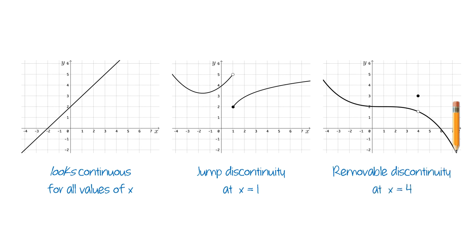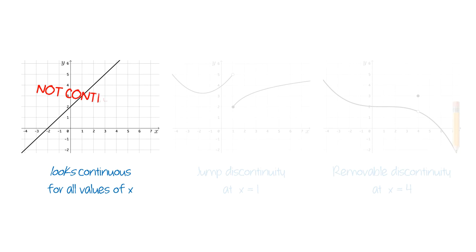Unfortunately, it turns out that the first graph is also not continuous. How can this be? Sometimes relying on a picture can lead you to an incorrect conclusion. In order to address this issue, we'll need a more precise definition of continuity.